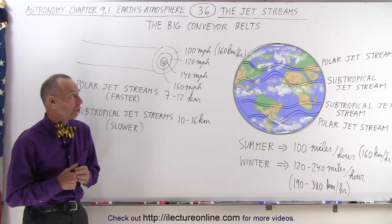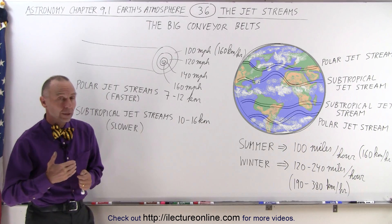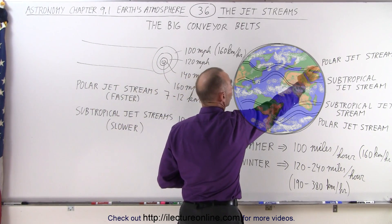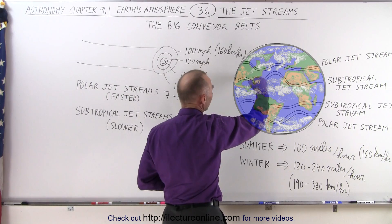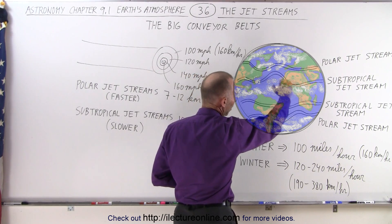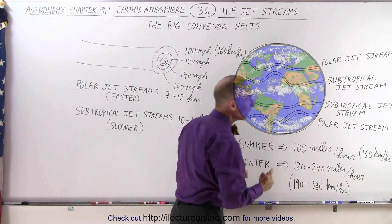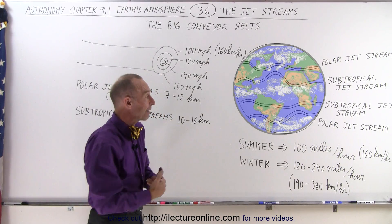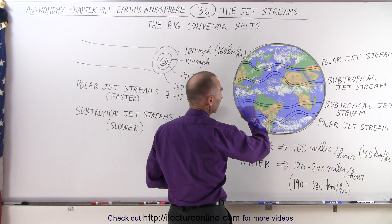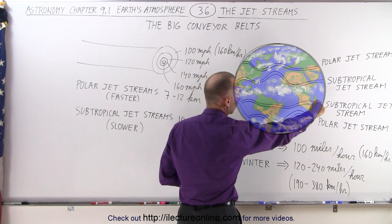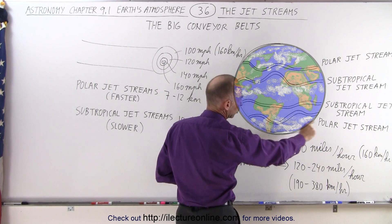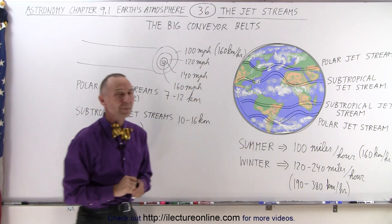There are four main jet streams in the world. One that is near the polar region in the north called the polar jet stream, one that's somewhat further south above the equator which is called the subtropical jet stream, and then in the southern hemisphere we have a pair to resemble what we have in the northern hemisphere — a subtropical jet stream, and then further to the south, closer to the pole, a polar jet stream.